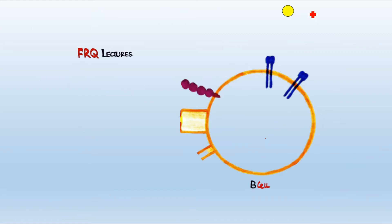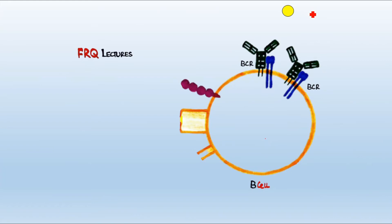Looking at the structure of the B cell, we have blue structures which are the B cell receptors or BCR — similar to TCR on T cells. There are also other structures: antibodies attached to the surface of B cells, called surface antibodies. B cells ultimately produce antibodies, but some antibodies are also attached to the surface and play a major role in recognition and the whole process of B cell activation. These antibodies are tightly bound to the BCR.